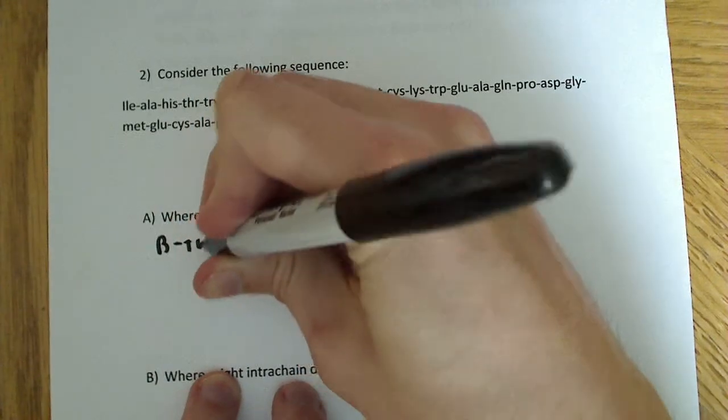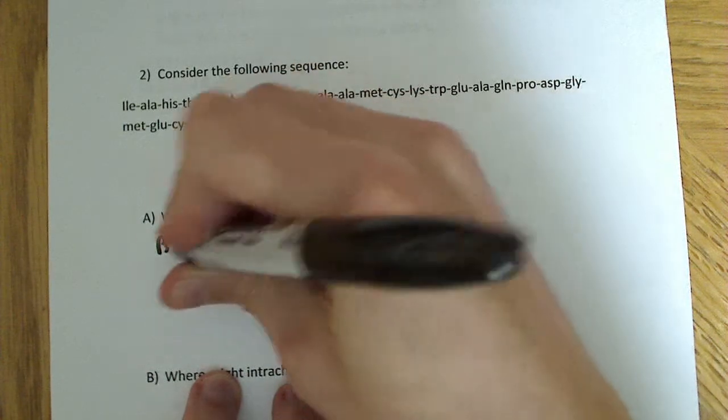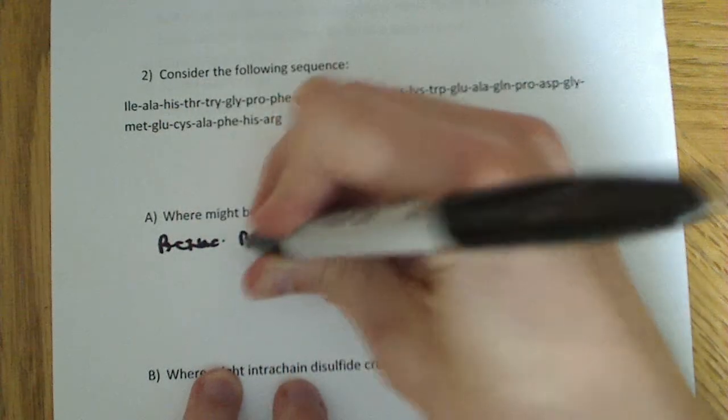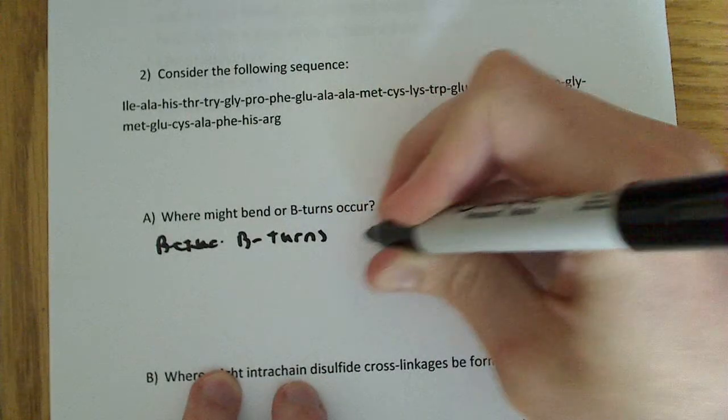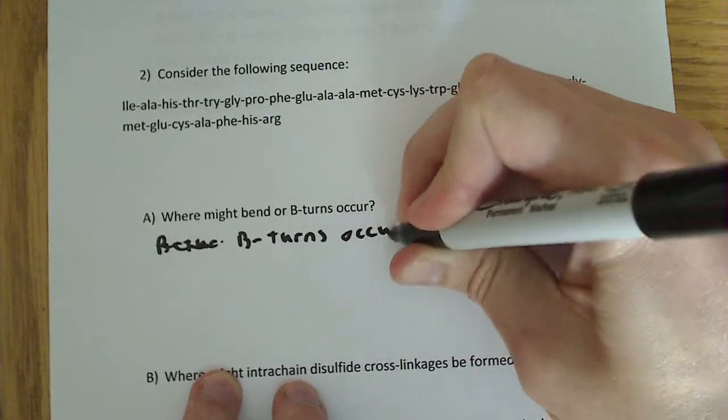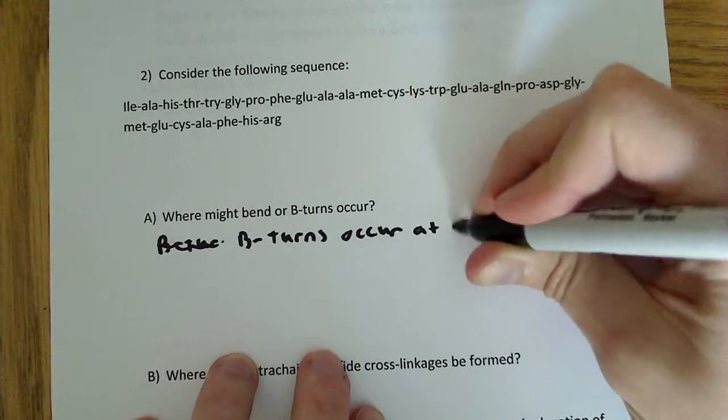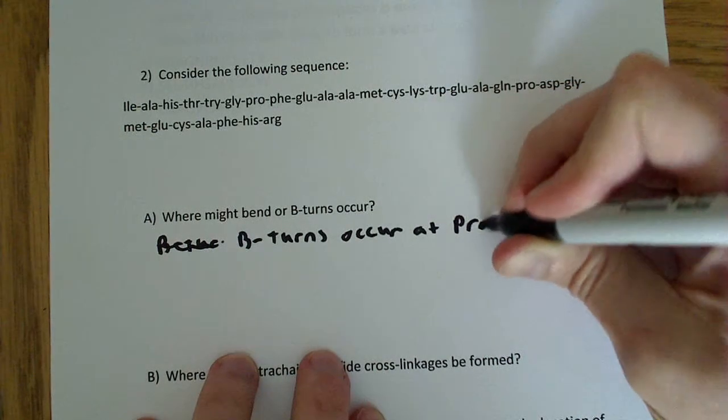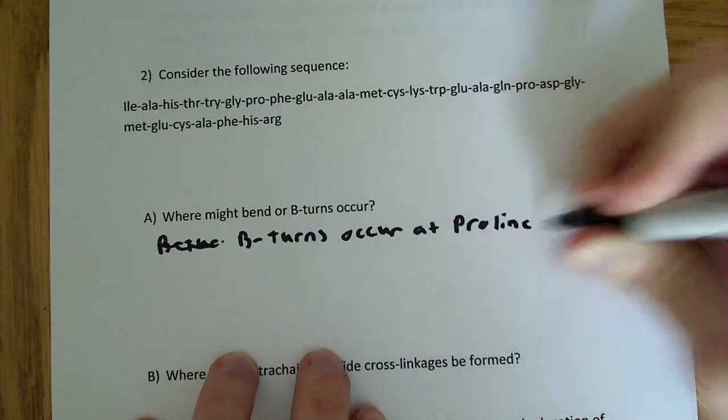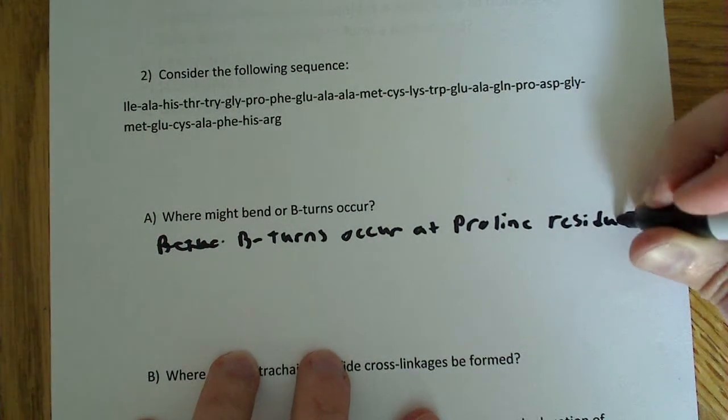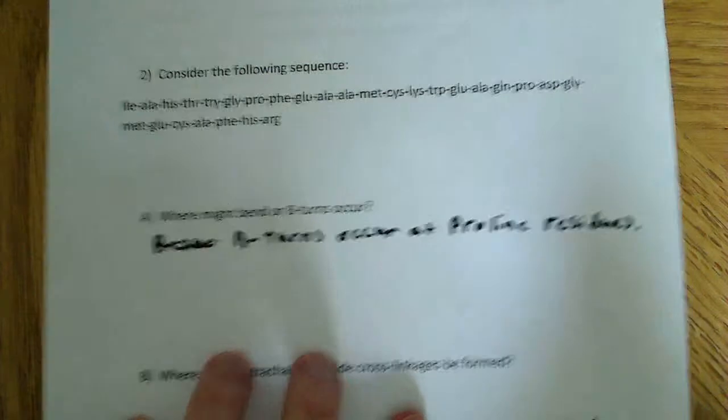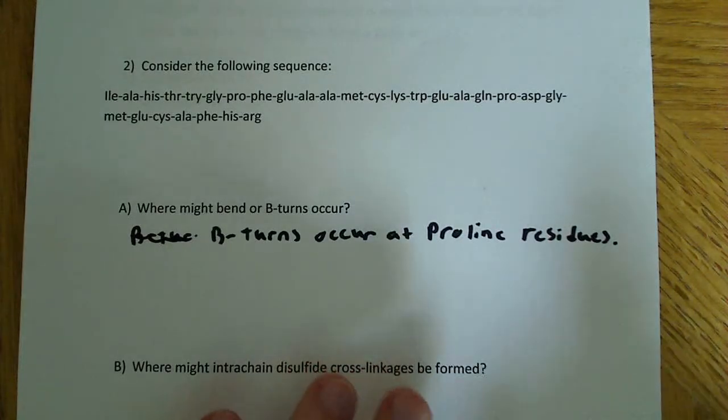Beta turns occur at proline residues. So beta turns occur where proline residues are.